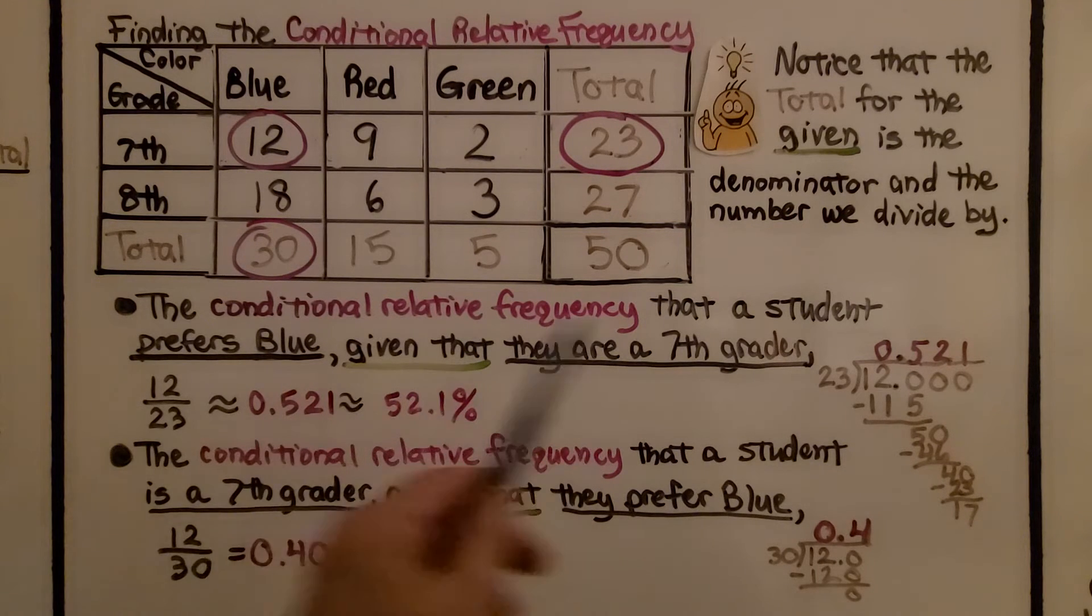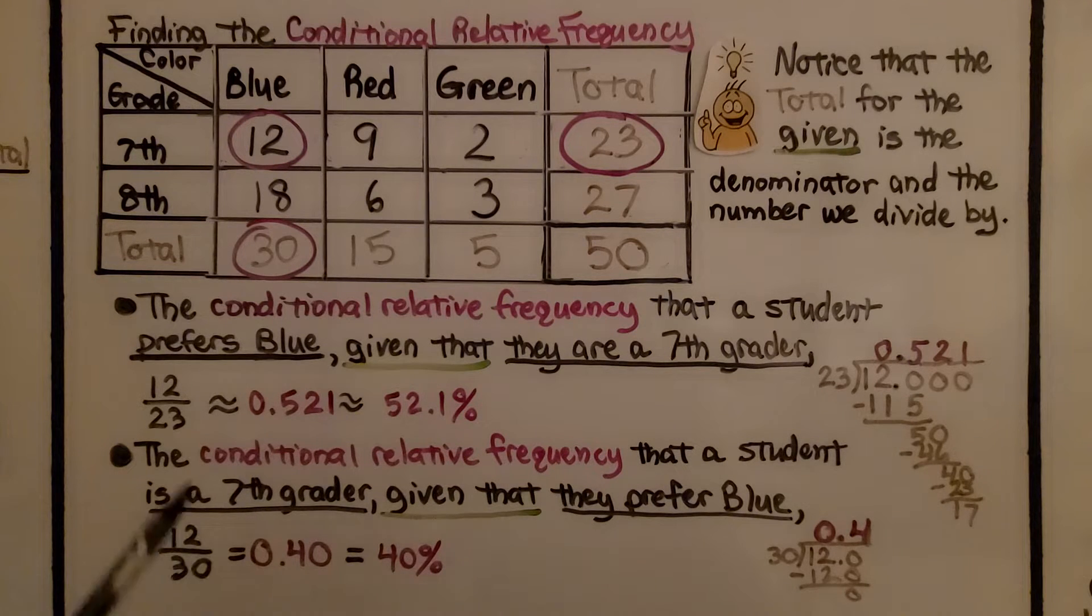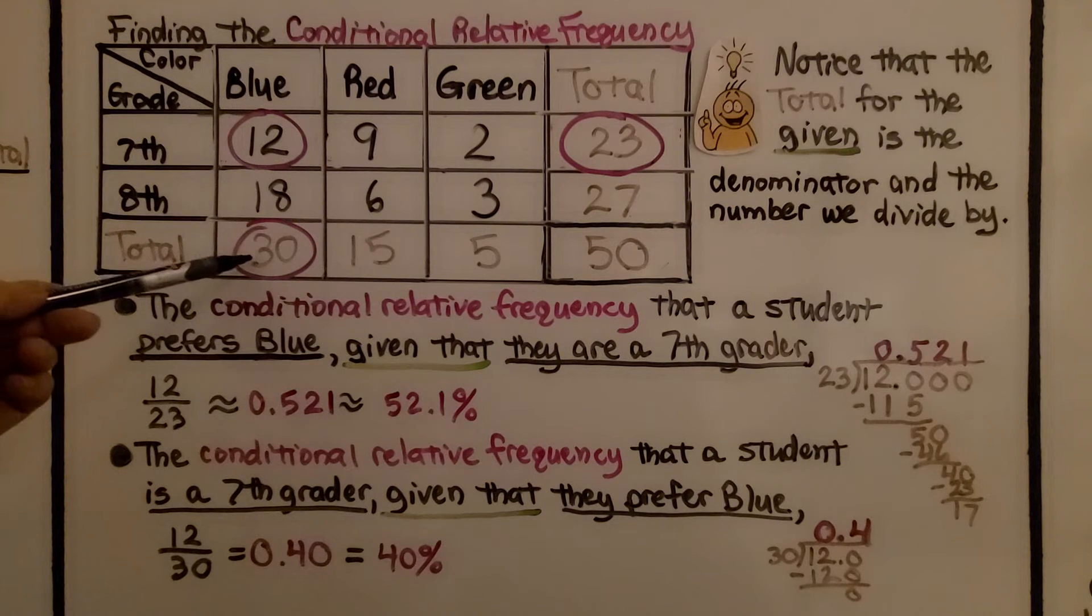Notice that it said a student prefers blue given that they're seventh grade. We can flip it around and say the conditional relative frequency that a student is a seventh grader. So now seventh grade is first. Given that they prefer blue,